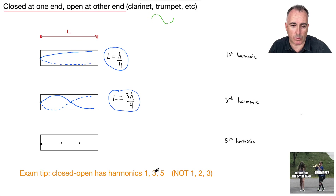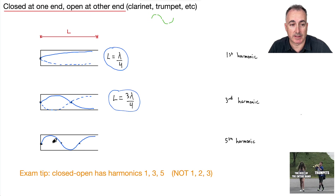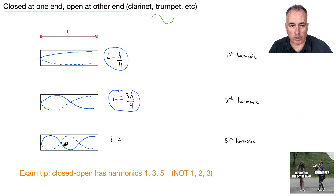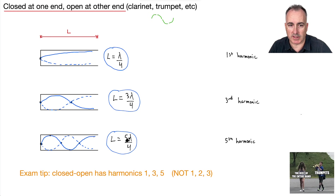Does this really give us a fifth harmonic? Let's see. This one goes up, then down, then in the middle, then flappy at the open end — with the dotted line version doing the opposite. Counting quarter-wavelengths: one, two, three, four, five quarters — so L = 5λ/4. The first was 1λ/4, so this is five times that. That must be the fifth harmonic.